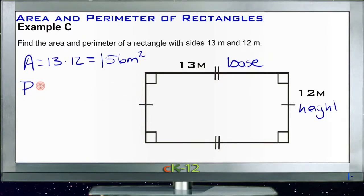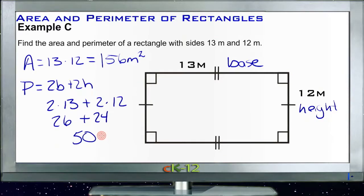And then perimeter is 2B plus 2H, so it's 2 times 13 plus 2 times 12. Well, 2 times 13 would be 26, and 2 times 12 would be 24, so that would be a total of 50 meters around the outside edge. And we're done.